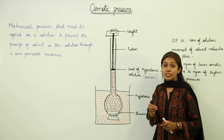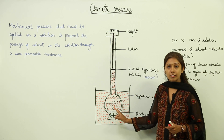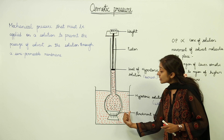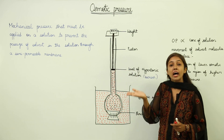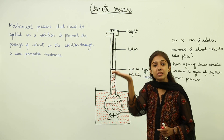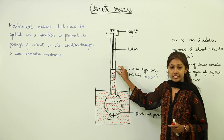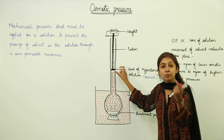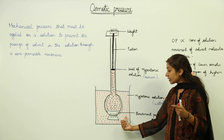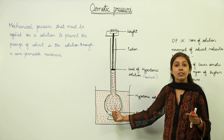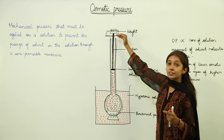Namely, endosmosis is going to take place — means the water is going to enter from the beaker into the thistle funnel. When the water enters into the thistle funnel, this piston is going to rise upwards. This proves that endosmosis is taking place, means the water is moving from the beaker into the thistle funnel. The movement of the piston upwards is proof of that.